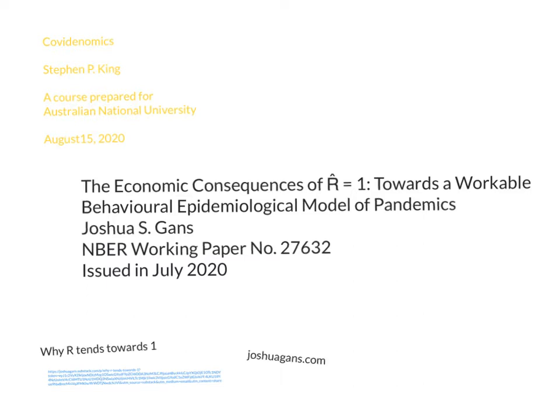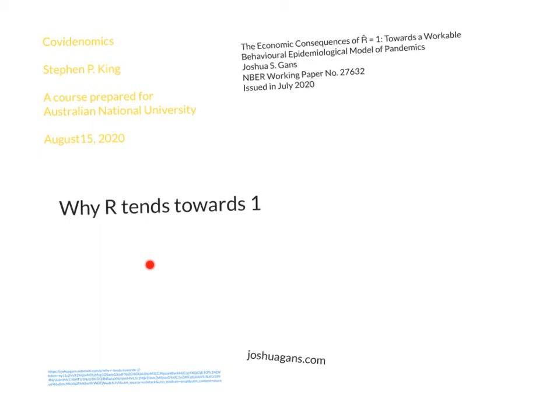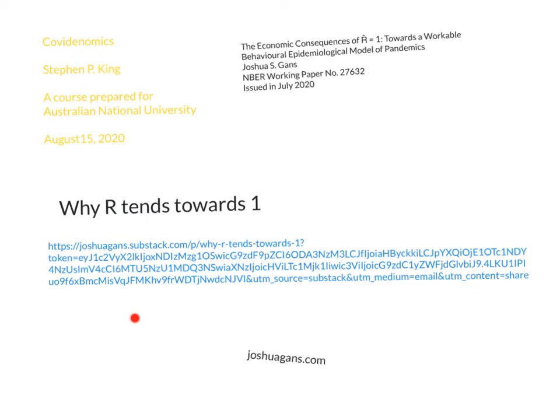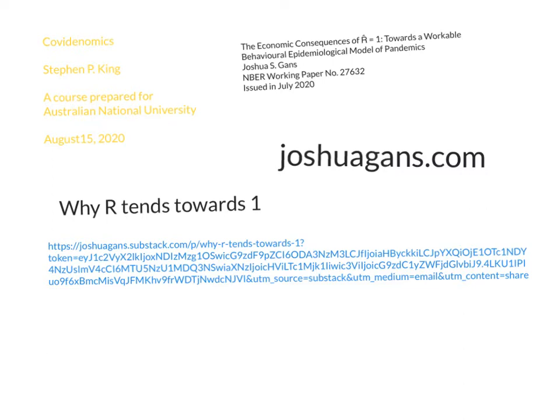If you want a simpler explanation, Joshua's also got a short post on it. The link is unfortunately a pretty horrible URL, but if you want access to this simplified description of the model, the best way is just to go to Joshua's website, joshuagans.com — it's part of Joshua's newsletter. Just subscribe to his newsletter and look for this particular article.